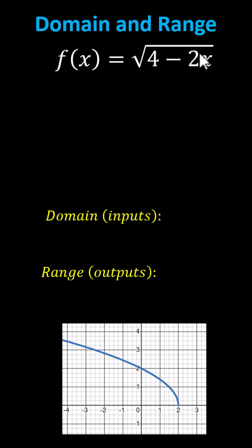For any square root function, the expression under the square root must be non-negative. To determine the domain, we need to solve the inequality 4 minus 2x greater than or equal to 0.